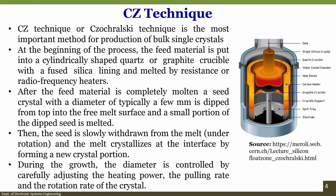Let us see the first technique, which is called Czochralski technique or CZ technique. CZ technique is the most important method for production of bulk single crystals. At the beginning of the process, the feed material is placed inside a cylindrical shaped quartz crucible. Looking at this image, from the bottom there are electrodes which are heated at high temperature, there is a spill tray, a support for crucible, then we have a graphite crucible — this is a cross-sectional image so we can understand.